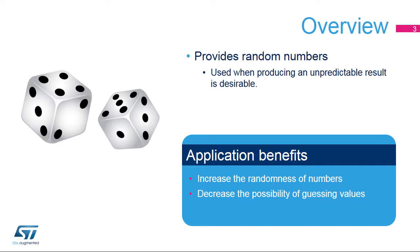The Random Number Generator or RNG integrated inside STM32 products provides random numbers which are used when producing an unpredictable result is desirable. Applications can benefit from the RNG to increase the randomness of numbers or to decrease the possibility of guessing certain values.